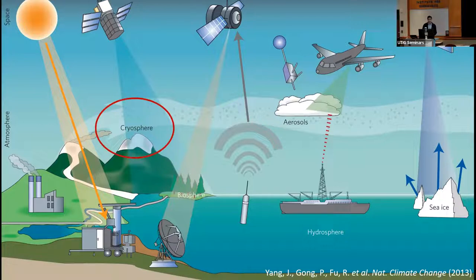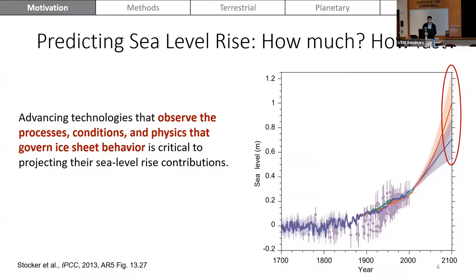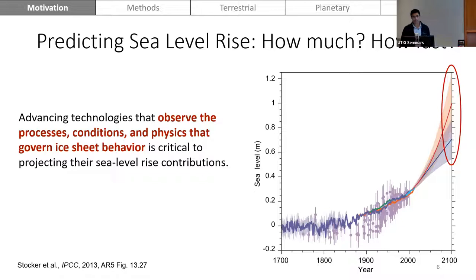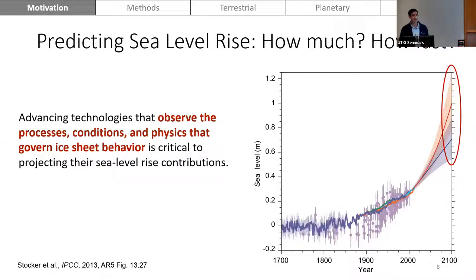For the focus of this talk, I'll majorly discuss the cryosphere and how we use radar to study glaciers, ice sheets, and ice shelves. When we think about one of the greatest challenges our society will face in the next century, it's the contributions of ice sheets to sea level rise. There's a great deal of uncertainty in sea level rise projections out to 2100, and it's important to advance technologies that can observe the processes and physics governing ice sheet behavior, because this will impact the lives of millions of people.